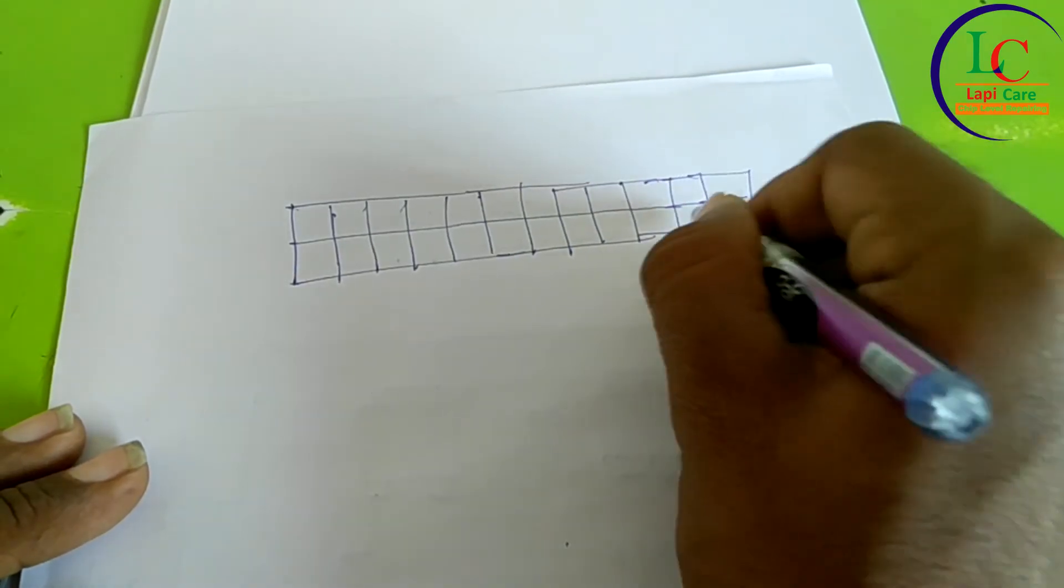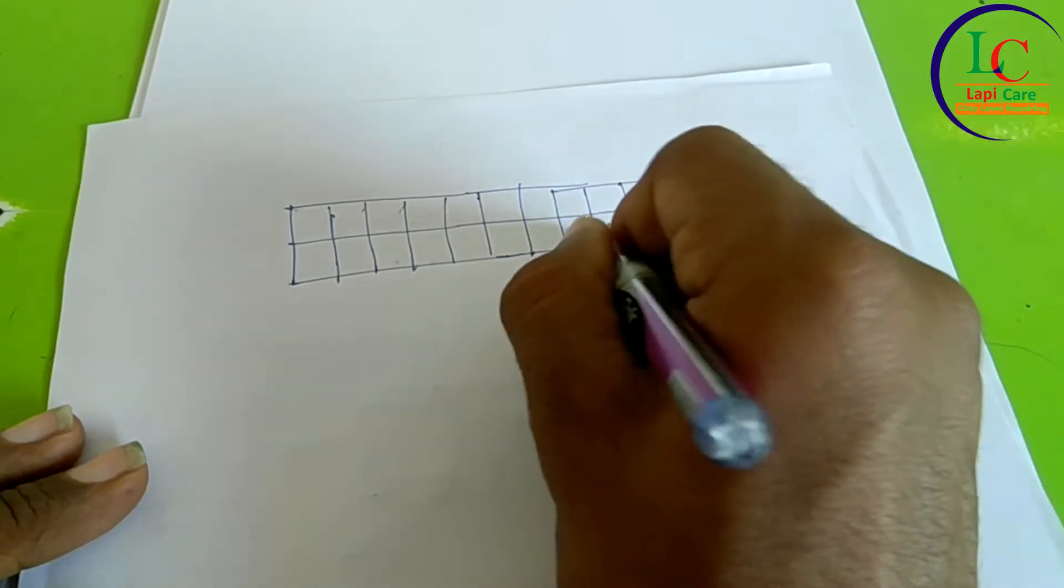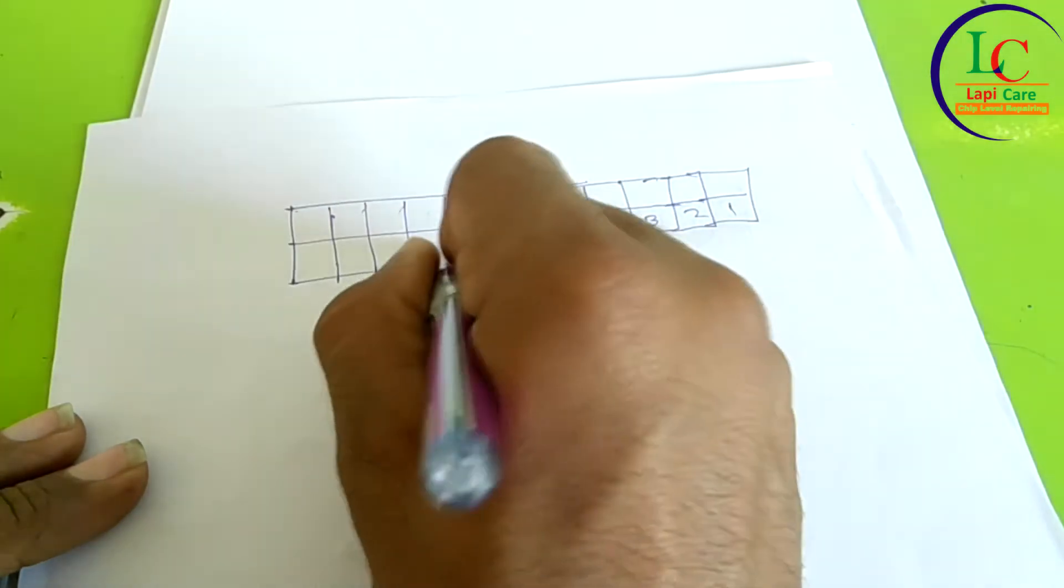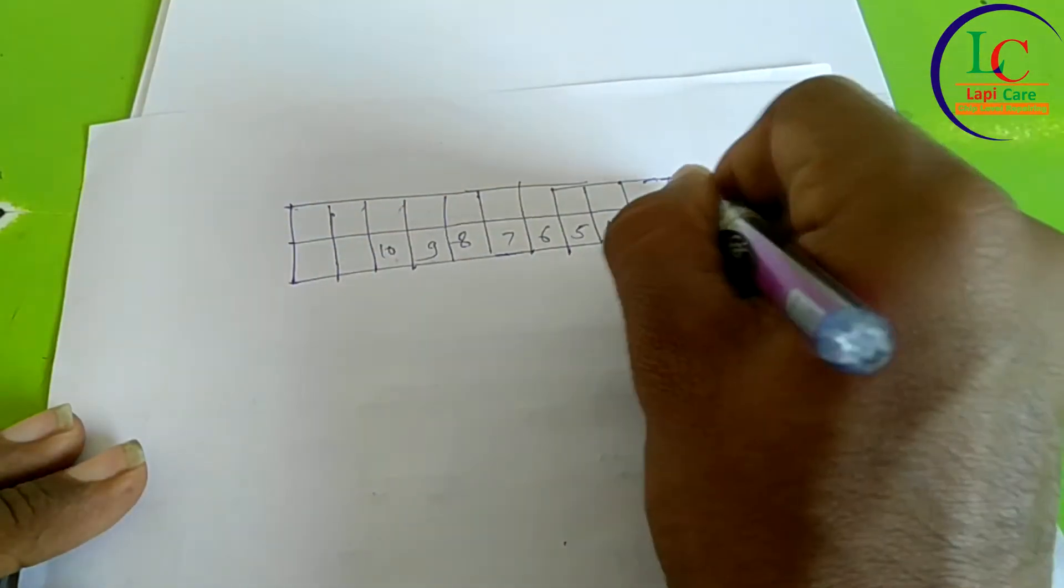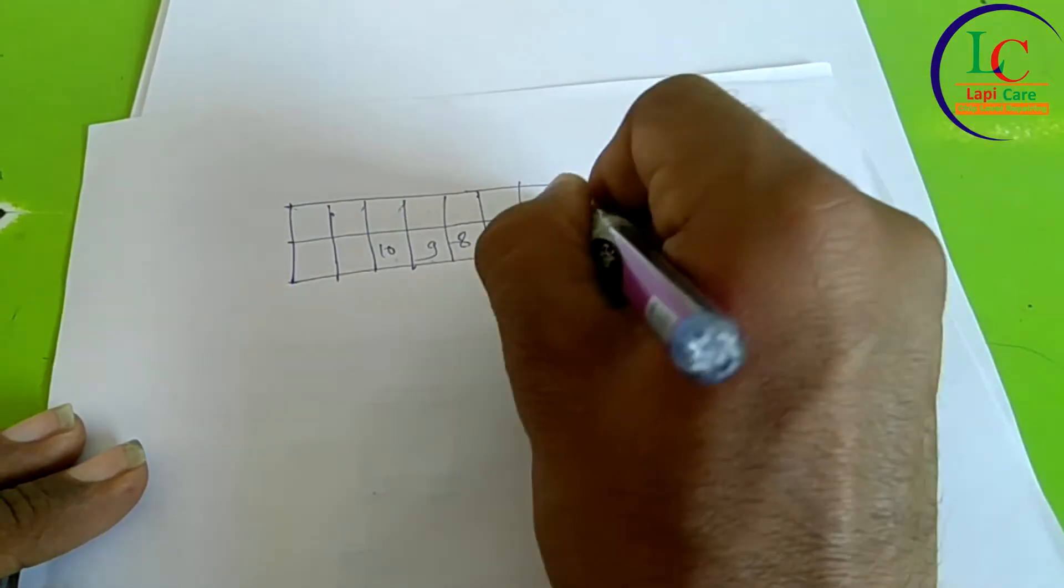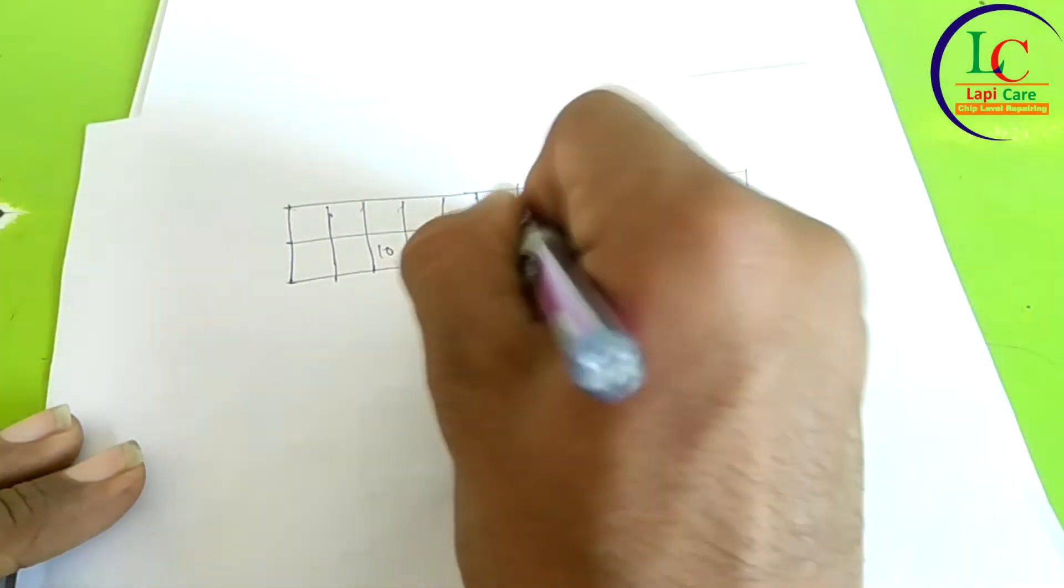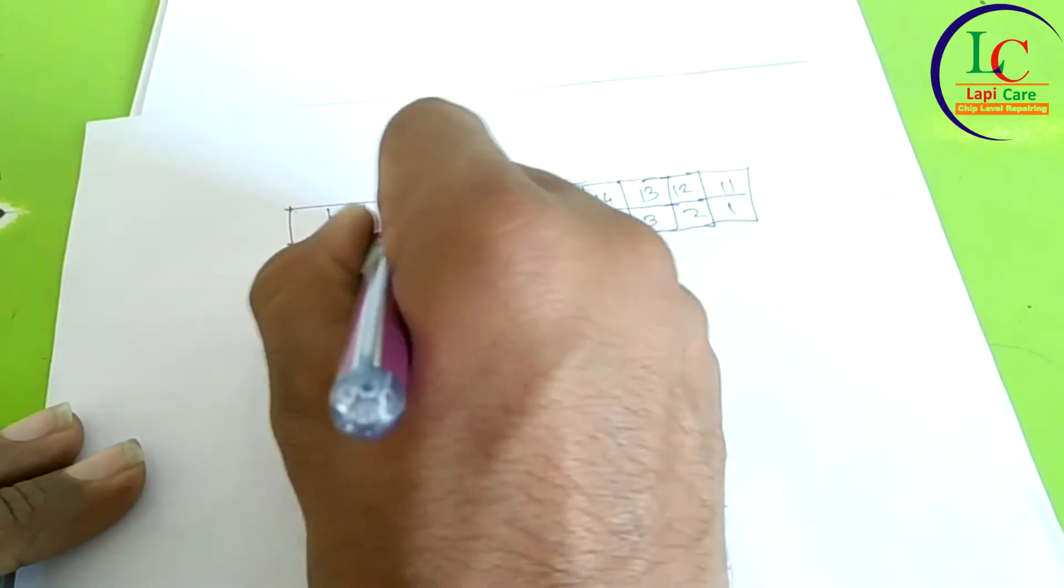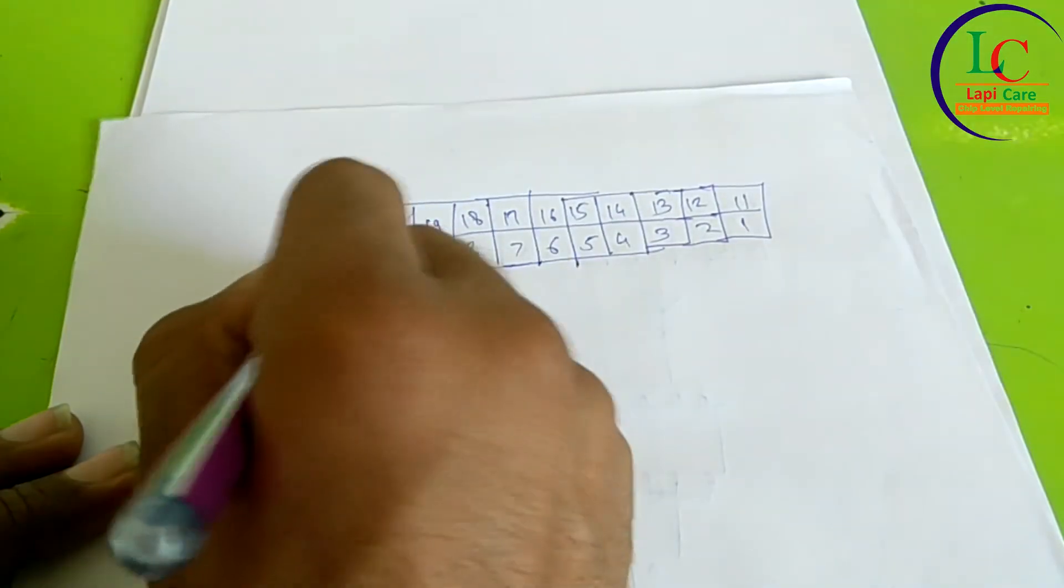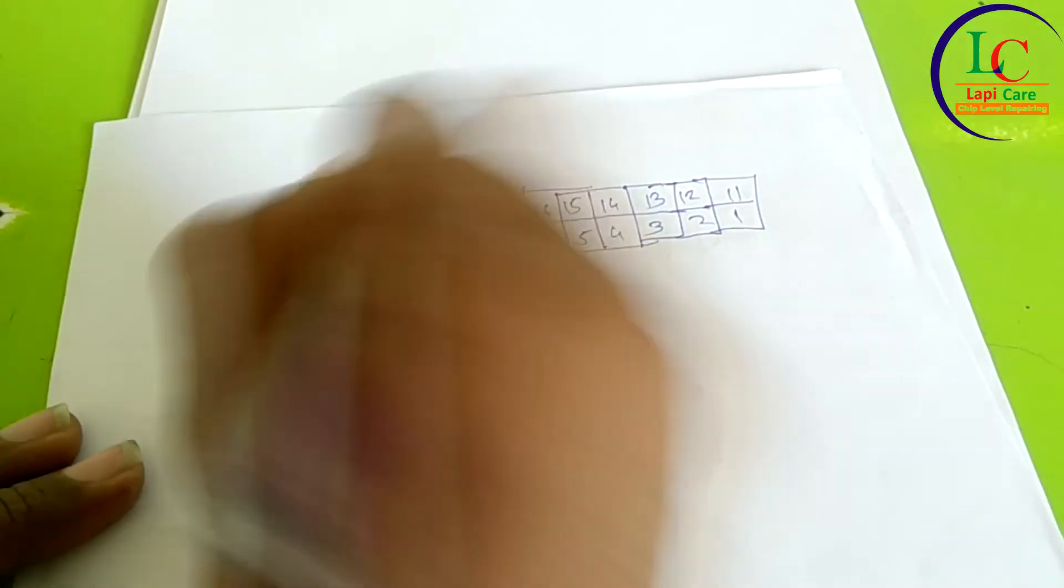The pin number starts from here: 1, 2, 3, 4, 5, 6, 7, 8, 9, 10, 11, 12, 13, 14, 15, 16, 17, 18, 19, 20, 21, 22, 23, and 24.